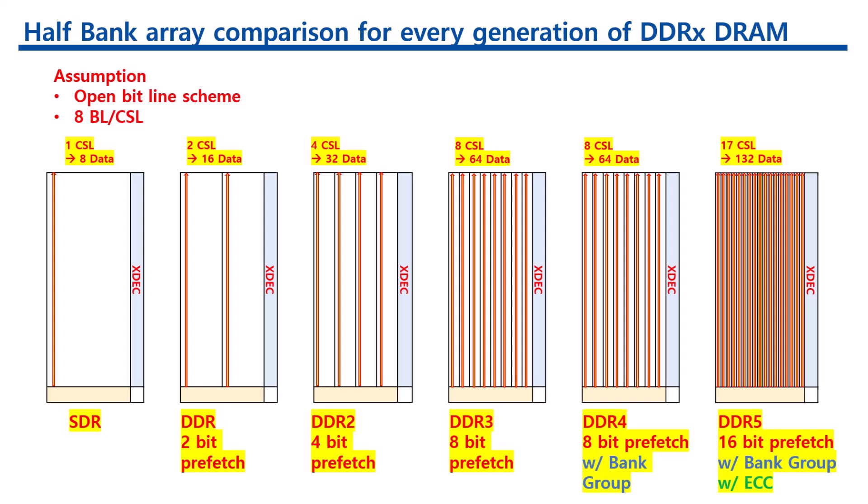More importantly, a 16-word prefetch would not match the 64-byte cache line size common in today's computers. With a 64-bit or 72-bit interface in a typical compute environment which uses a 64-byte cache line, a prefetch of 8 along with a burst length of 8 is a better match. Any misalignment of cache line size and burst length can have a negative impact on the performance of embedded systems.